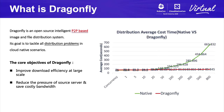Let me first answer what is Dragonfly. Dragonfly is an open-source intelligent P2P-based image and file distribution system. Its goal is to tackle all distribution problems in cloud native scenarios. The core objective of Dragonfly is to improve download efficiency at large scale, reduce the pressure on the source server, and save costly bandwidth. We can take a look at the comparison chart on the right, which shows the time consumption of downloading files using native mode and Dragonfly mode. The native mode means that all nodes download directly from the source.